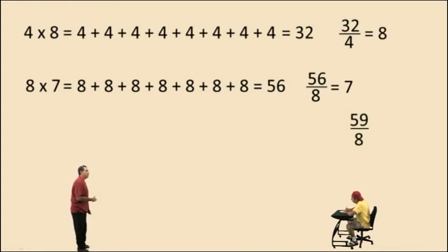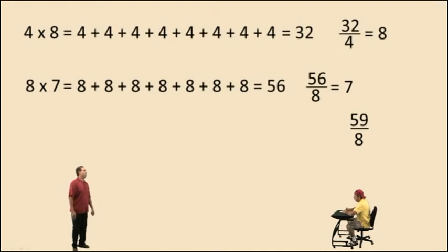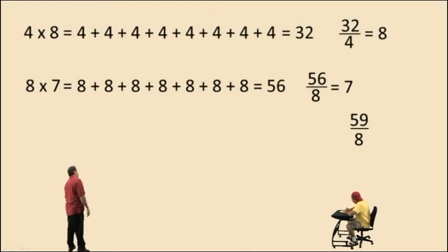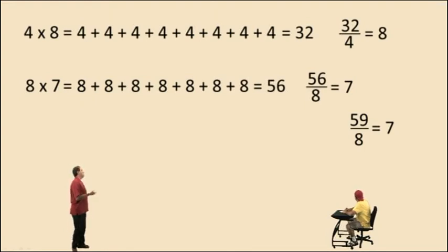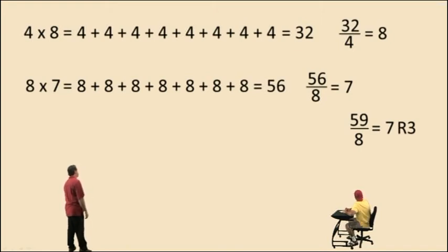Now what about 59 divided by 8? How many 8's go into 59? Well, 7 of those 8's will give you 56. But you have 3 remaining units. So 59 divided by 8 is 7 with a remainder of 3 units.